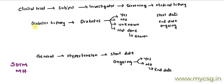The investigator is checking whether the subject has any diabetes history. The subject is asked whether they have diabetes, and they may say yes, no, or unknown. Sometimes the investigator may fail to ask this question, in which case it will be marked as not done, and they would capture the reason why it was not done.